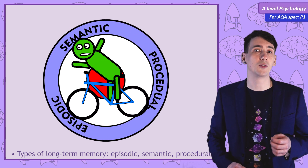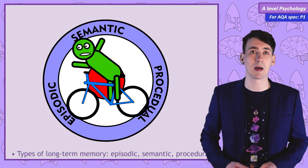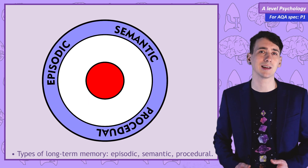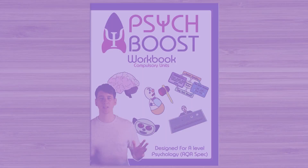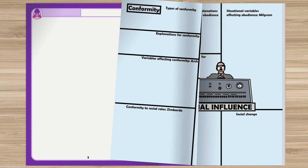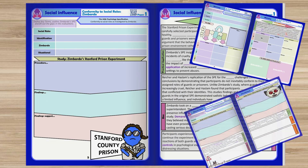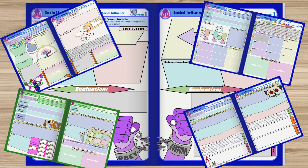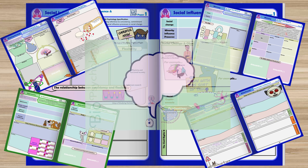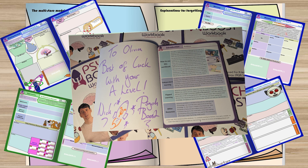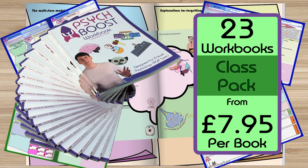So let's explore three types of long-term memory — semantic, procedural, and episodic — in this PsychBoost video. You can now follow along by making your notes in my PsychBoost workbook: 150 full-color worksheets covering all the compulsory units. It's on Amazon or you can get signed editions from my website, and teachers can order packs for the whole class.